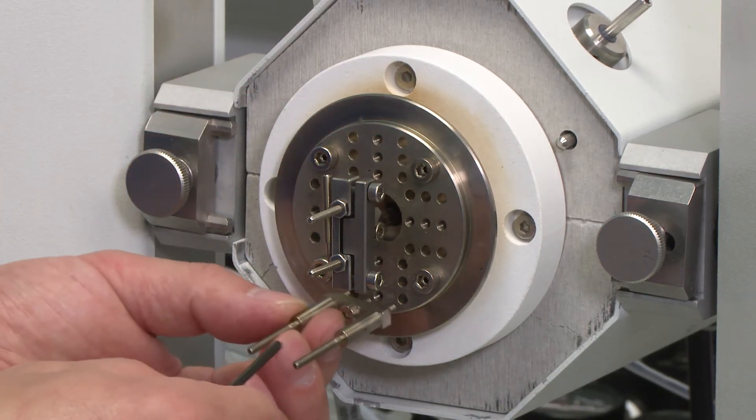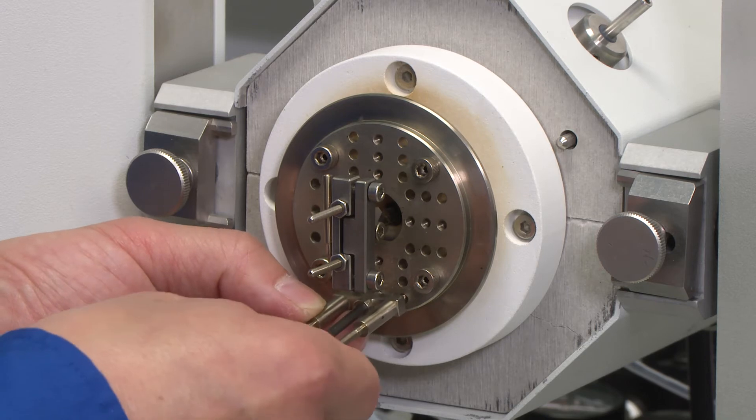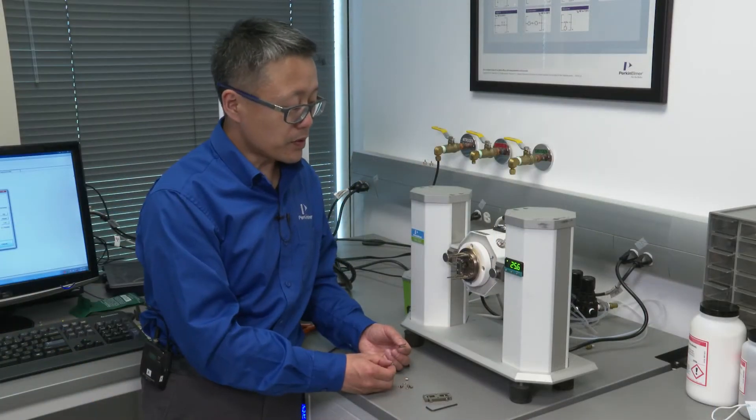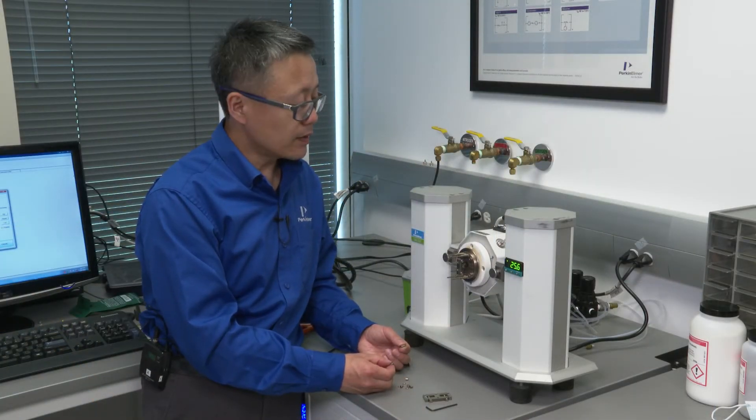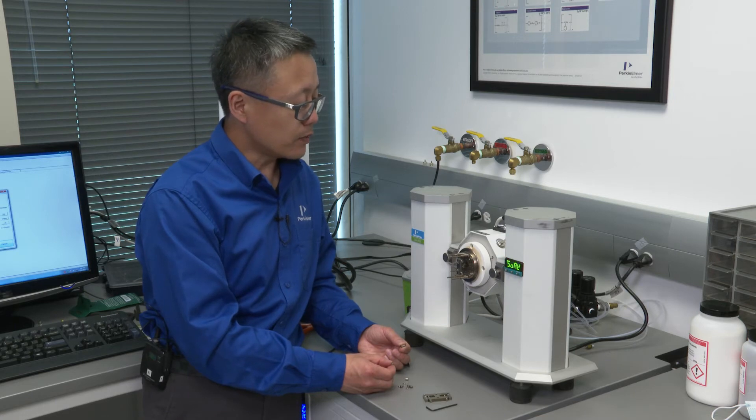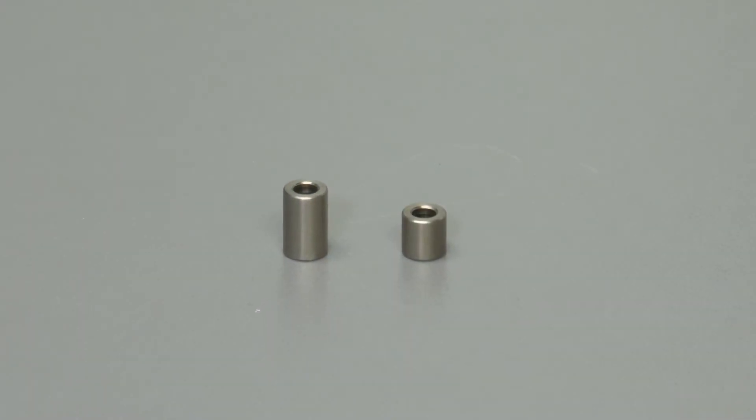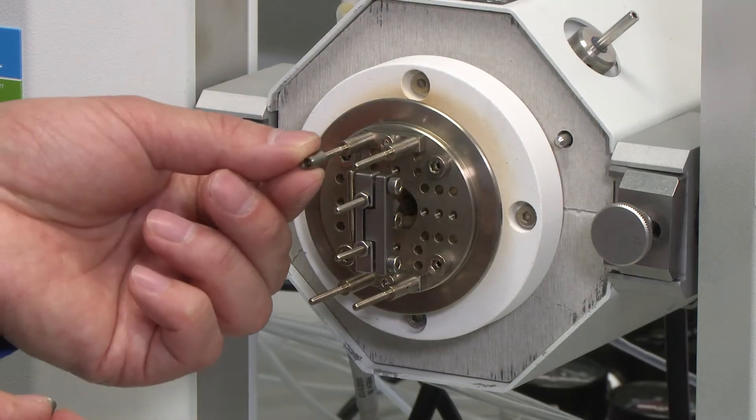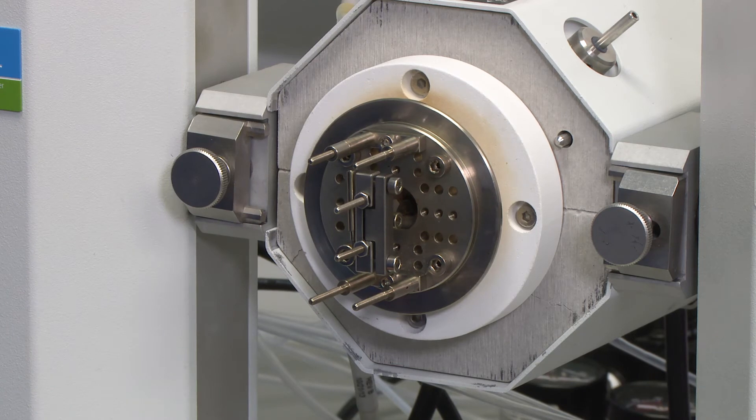Then we install the fixed pillars. There are two spacers with different lengths. Based on the sample length, we can choose this long one or the short one, or the combination of the two for the longest sample, which is going to be 10 millimeters long.